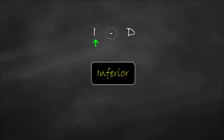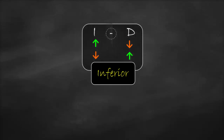A product will be inferior if we have a negative relationship between income and demand, which means income and demand move in opposite directions. For example, if income goes up, demand will go down, and vice versa — if income goes down, demand will go up. Consequently, if we calculate income elasticity, it will be negative, lower than zero, for an inferior good.